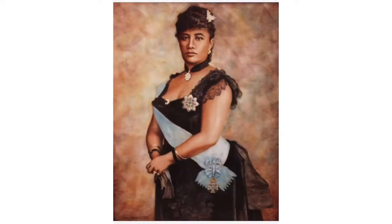Queen Liliuokalani was the queen of Hawaii. A lot of white businessmen moved to Hawaii — people like Sanford B. Dole, the fruit guy. They believed they could make more money if Hawaii were annexed by the United States, so they overthrew the queen, and Hawaii was annexed in 1898.